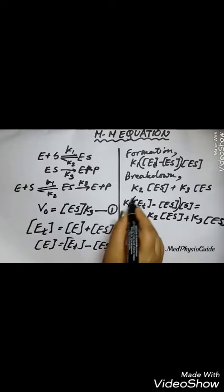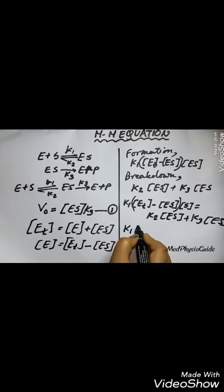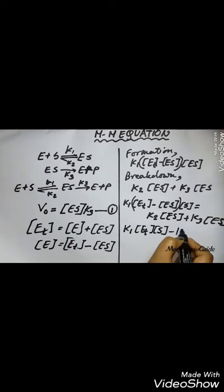Hence, K1 times ET minus ES concentration in bracket into concentration of the substrate would be equal to K2 concentration of ES plus K3 into concentration of ES.